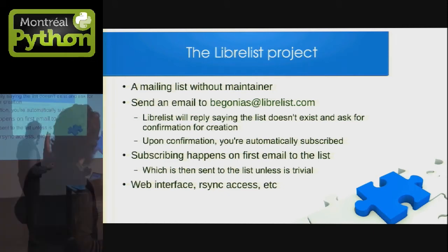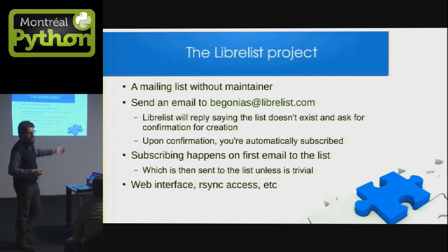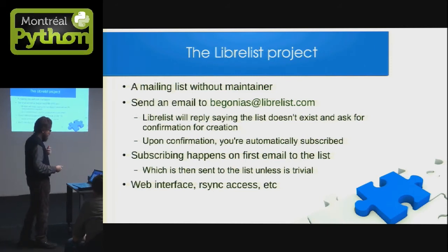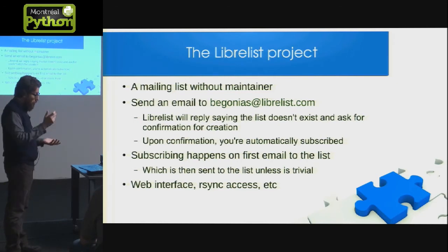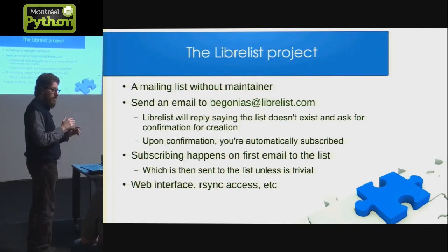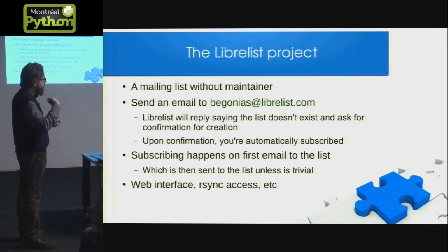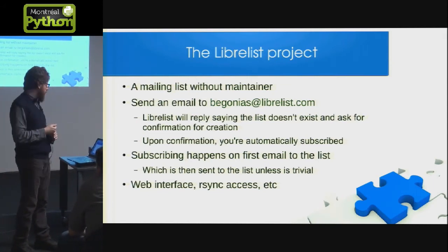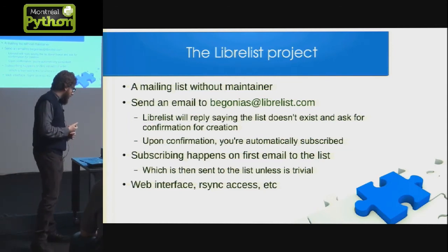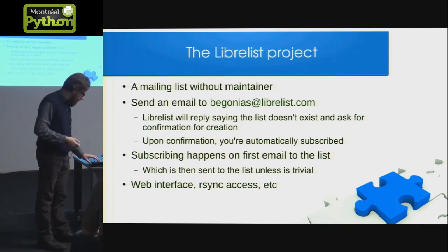L'idée du projet LibreList, c'est d'avoir une liste de distribution de courriels sans quelqu'un qui fait l'entretien. Si tu as besoin d'avoir une liste de distribution, par exemple Begonias, tu envoies un courriel là et le système, immédiatement, te va répondre : « Il n'existe pas cette liste, mais est-ce que tu as envie d'en créer une ? » Tu dis oui, et c'est tout — il y a une liste. C'est vraiment simple, vraiment vite. De la même façon, si tu envoies un courriel à une liste et tu n'es pas inscrit, elle te dit « Tu n'es pas inscrit, est-ce que tu veux te souscrire ? » Tu dis oui, et elle envoie ton courriel. Et aussi, il y a une interface web avec accès à toute l'histoire du système.